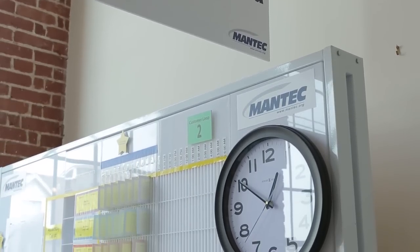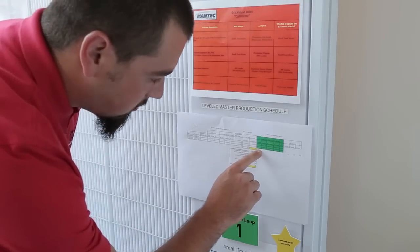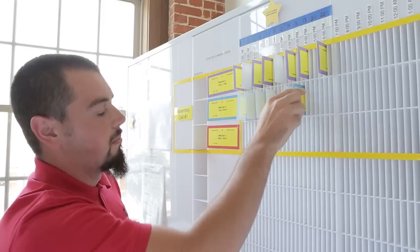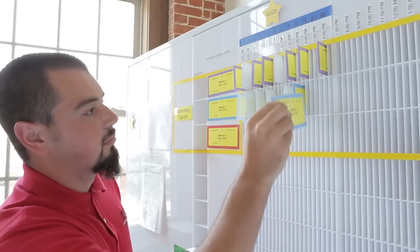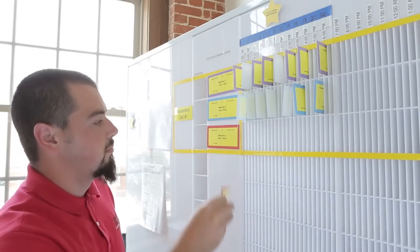The pull system starts with creating a weekly production schedule, which is used to calculate average daily demand. The next step is to take average daily demand and level-load the demand across the shift and across products.